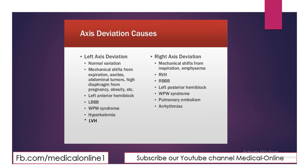Left Axis Deviation can be a normal variation, or caused by mechanical shift from expiration, ascites, abdominal tumors, high diaphragm from pregnancy or obesity. Left Anterior Hemiblock can cause Left Axis Deviation, as can Left Bundle Branch Block, Wolf-Parkinson-White Syndrome, Hyperkalemia, and Left Ventricular Hypertrophy.